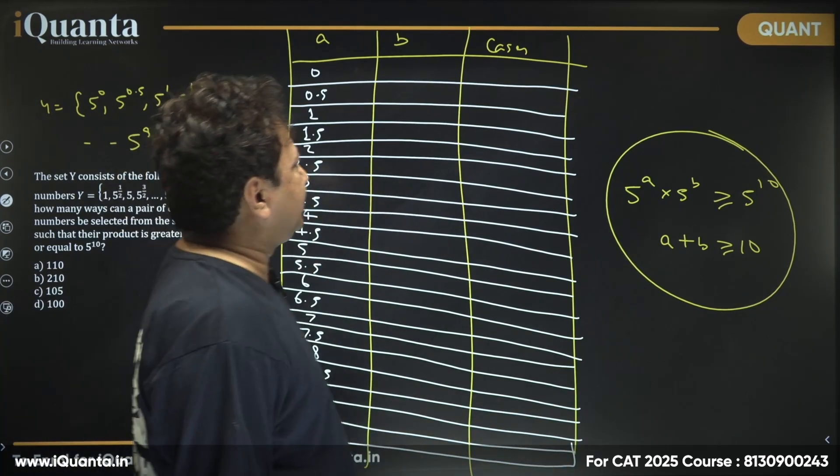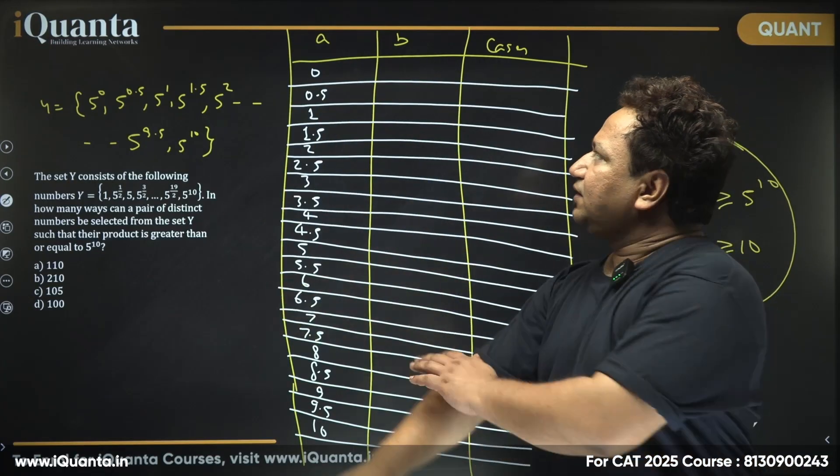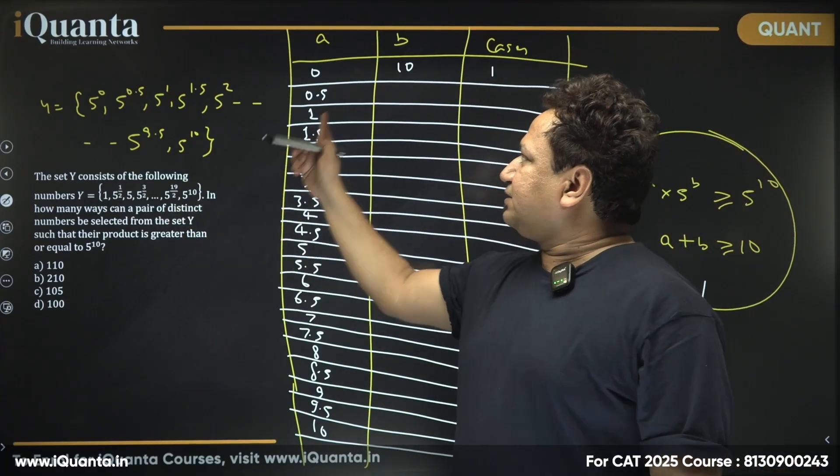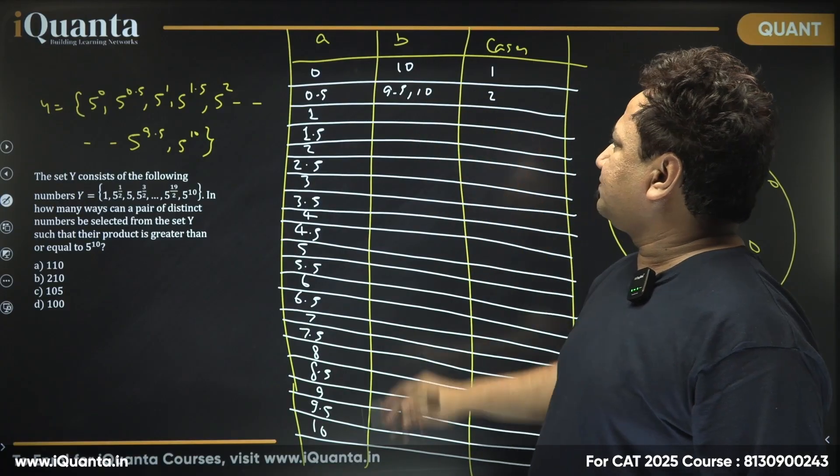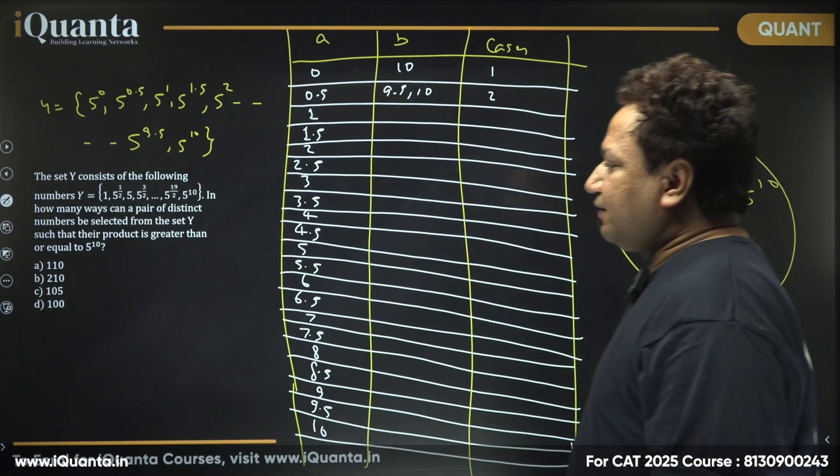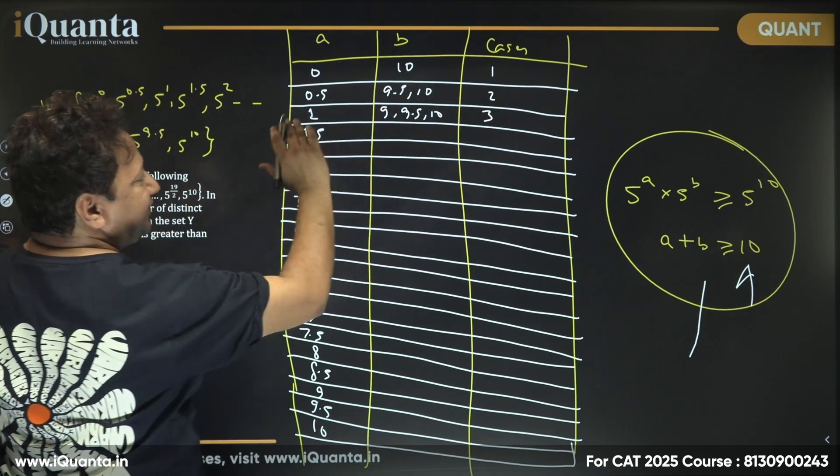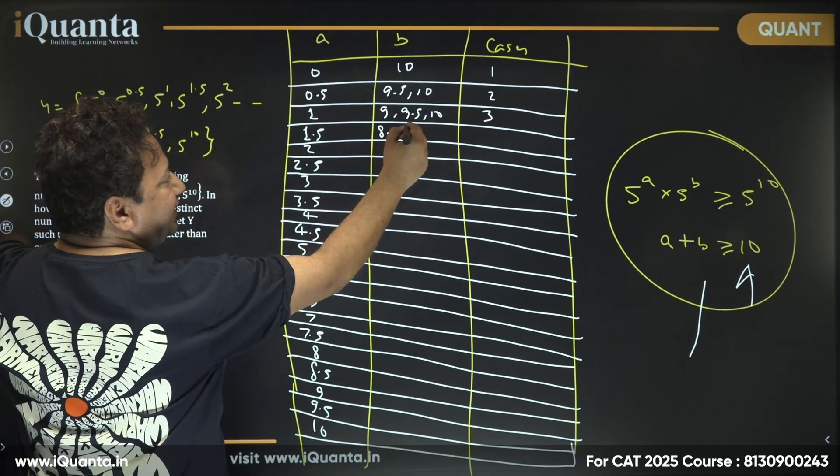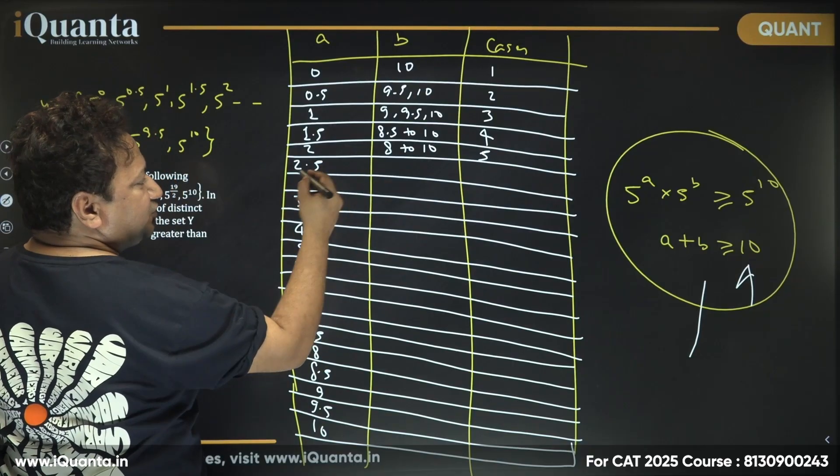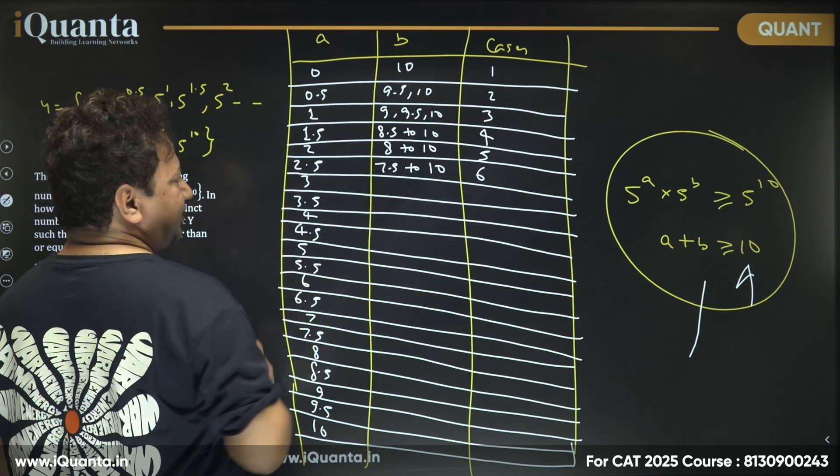Now let's put in the values: a + b must be greater than or equal to 10. Here we have 0, so what will the value of b be? 10 only, we have only one case. For 0.5 it can be 9.5 or 10, two such values. For 1, I can have 9, 9.5, or 10, three such values. For 1.5, 8.5 till 10, four such values. If it is 2, 8 to 10 will be five such values. If it is 2.5, 7.5 to 10 will be 6 such values.